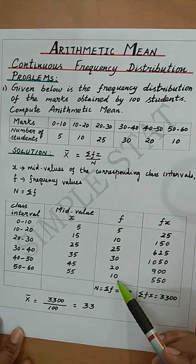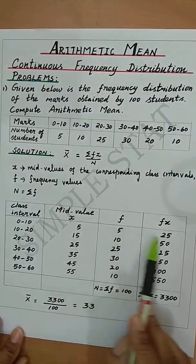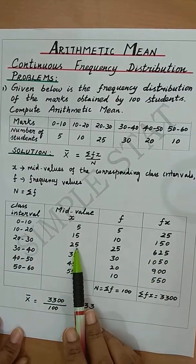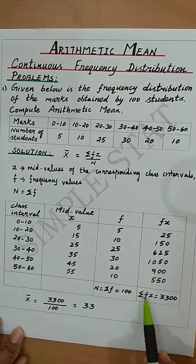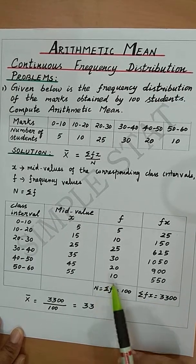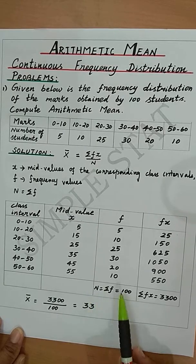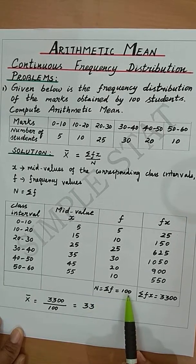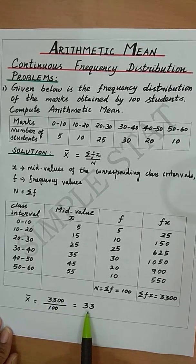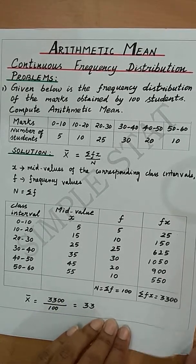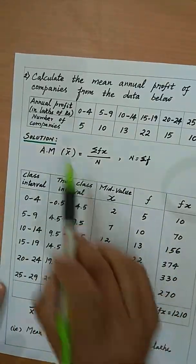Write all the frequency values, then find fx: 5 × 5 = 25, 15 × 10 = 150, 25 × 25 = 625, etc. The total Σfx = 3300, and the total frequency n = 100. Therefore x̄ = 3300 / 100 = 33 as the average.